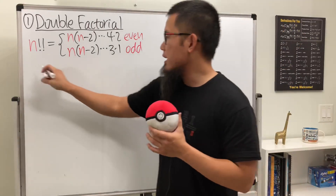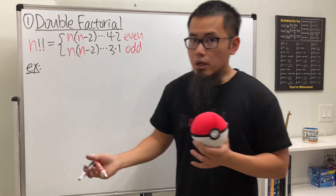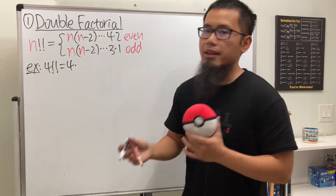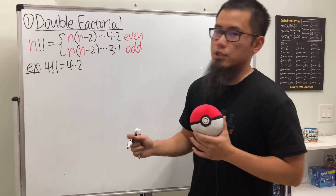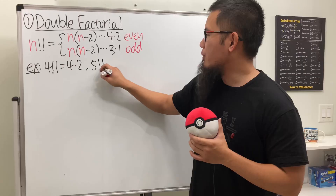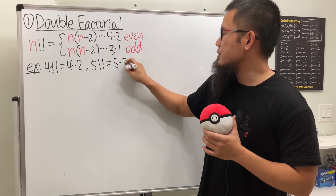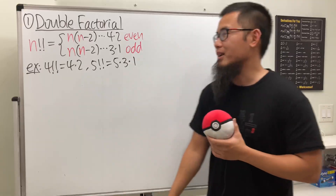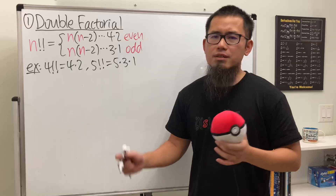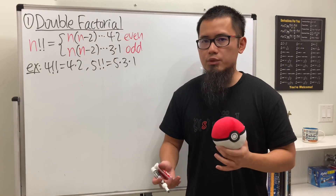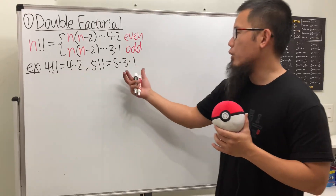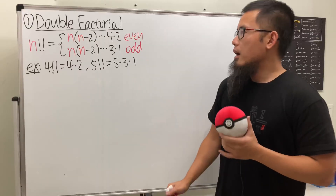For four double factorial, we start with four and multiply by the next even number, which is two — that's equal to eight. For five double factorial, it's five times three times one. The application for double factorials is in calculus — in sequences and series, it's useful when you want to write the product of all even or all odd numbers in a compact form.